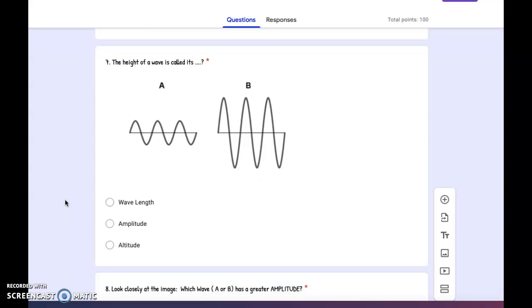Number seven: The height of a wave is called its... wave length, amplitude, or altitude?